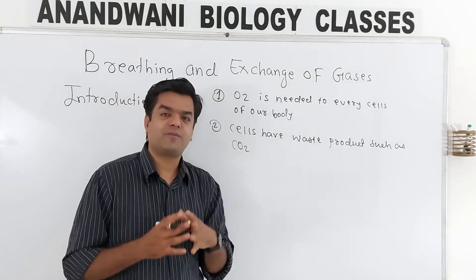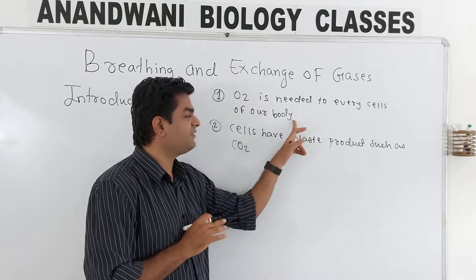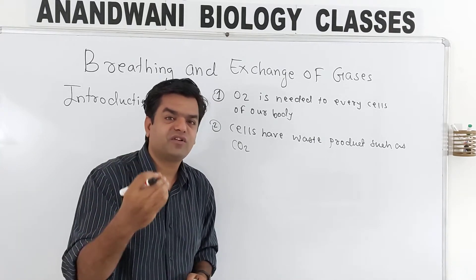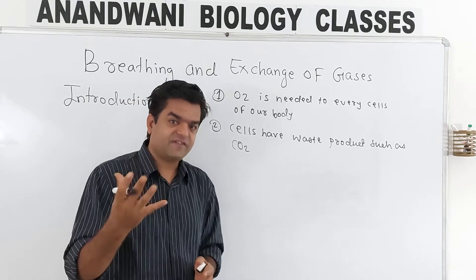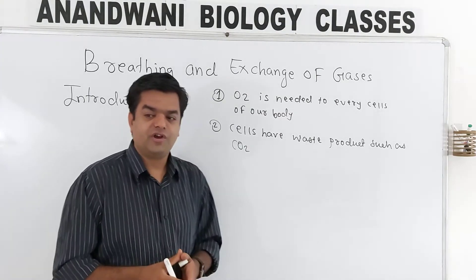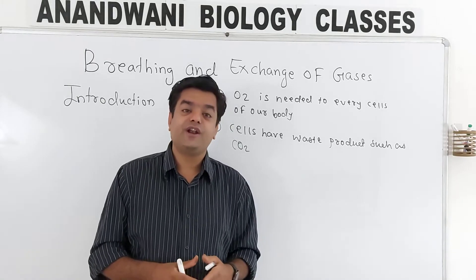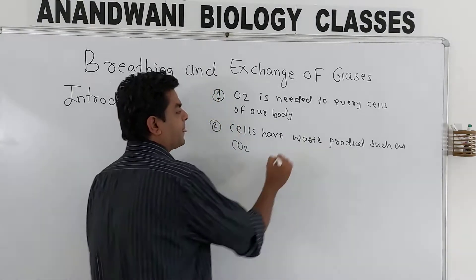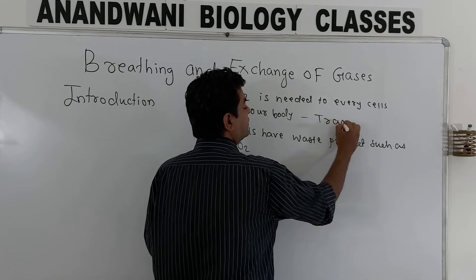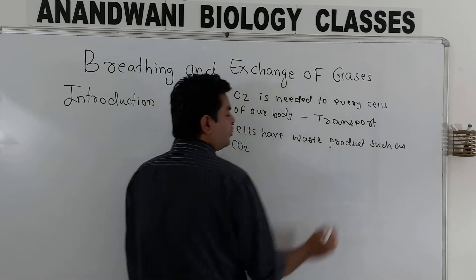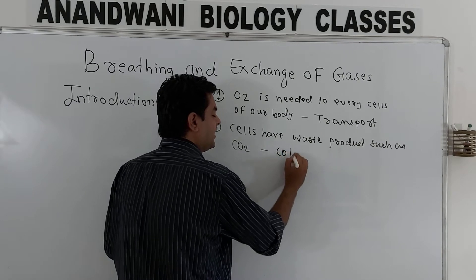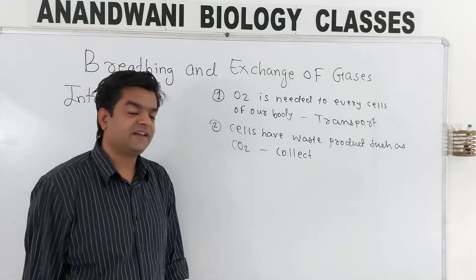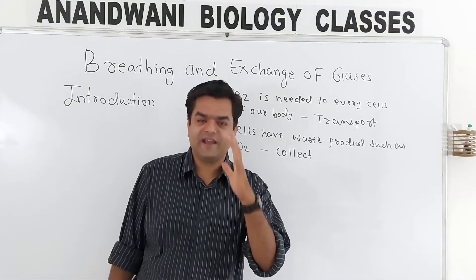Every cell of our body needs a continuous supply of O2, so we supply O2 to every cell. And when we are supplying O2 to every cell, every cell is also creating a waste product. That waste product is CO2. So we collect the CO2 and throw the CO2 out. We transport O2 and collect CO2.